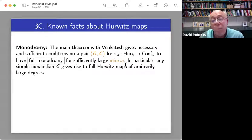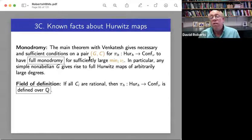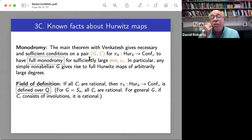That means monodromy either AN or SN for sufficiently large multiplicities. So we can only prove it in the limit, which is enough for the conjecture that I asserted. But we think that much stronger things hold. That's monodromy. So in particular, any simple non-abelian G gives rise to full Hurwitz maps of arbitrarily large degree.